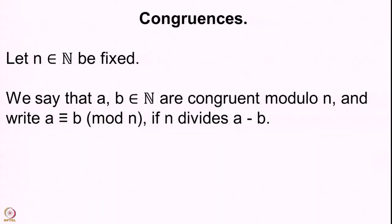Welcome back. We almost began our new theme in the last lecture, which is on congruences. We gave the very basic definition: two natural numbers are congruent to each other modulo a given fixed natural number n. The definition is as follows — whenever we fix n, any two natural numbers a and b are said to be congruent modulo n if n divides the difference a minus b. We write it as a ≡ b (mod n).